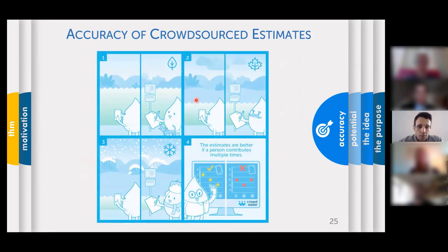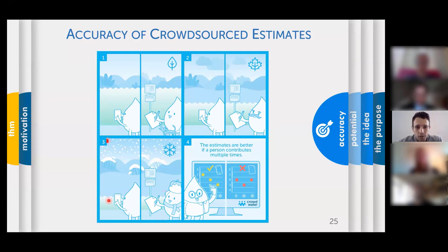In summary: we had people measuring with the app and with pen-and-paper stations. At the pen-and-paper stations it was always a different person, whereas in the app it was mostly the same person. The finding from this study was that estimates are better when one person contributes multiple times, as is the case with the app.